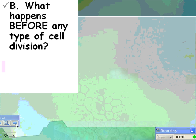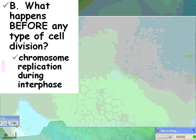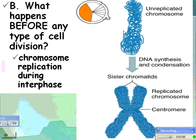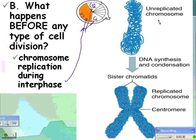So what happens before any type of cell division? Same thing as mitosis — chromosome replication during interphase. You have an unduplicated chromosome. You have G1, then S, then G2 in the cell cycle — those are all interphase. During interphase, specifically the synthesis phase, you go from an unduplicated to a duplicated chromosome. DNA synthesis occurs, and that's going to be the topic of a unit two units from now.